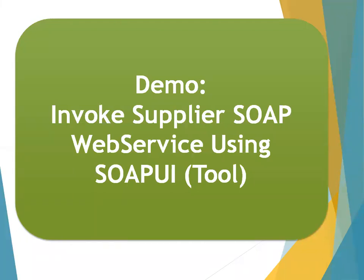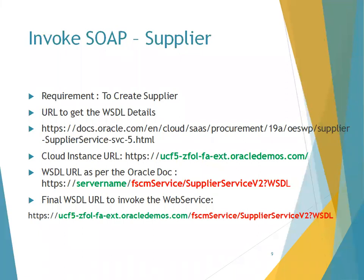Now we'll understand how to create a supplier using SoapUI with the SOAP web service. This approach is applicable to any kind of web service in Oracle Cloud ERP — it can be a contract, a project, or any other entity. First, identify your requirement, then find the WSDL URL. Oracle's documentation provides a link for the supplier web service and similarly for any other web service. You need your cloud instance URL, and Oracle clearly specifies the WSDL URL structure: HTTPS followed by the server name followed by the appropriate navigation path for the WSDL.